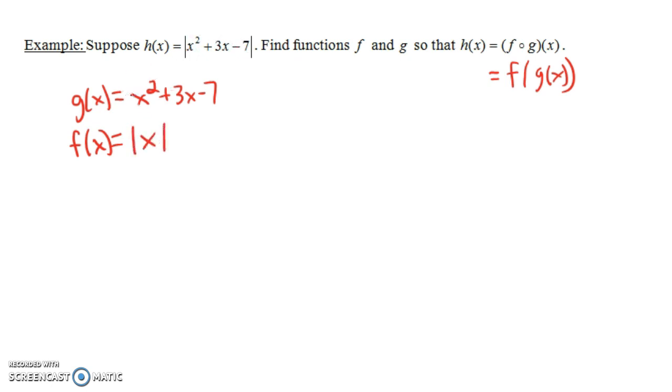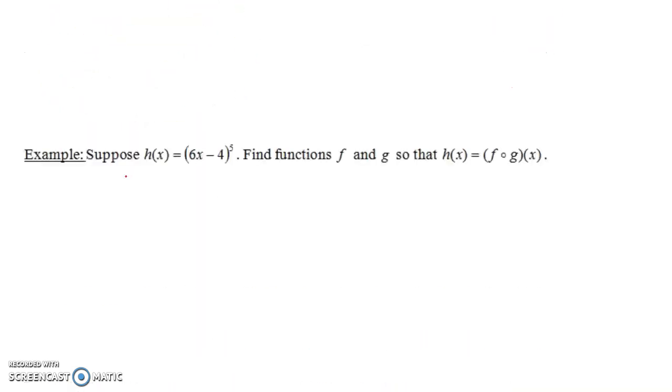So the inside function is x squared plus 3x minus 7, and the outside function is the absolute value of x. And you can check if you compose those, you really do get the original function h. Let's do one more.